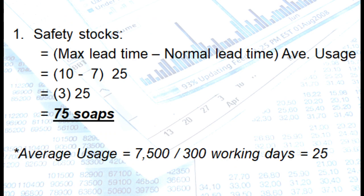So let us compute for the units that we need to maintain as safety stock. So we will use the formula maximum lead time minus normal lead time multiplied by average usage. In the problem, our maximum lead time is 10 while our average normal lead time is 7. Now we need to compute for the average usage. How are we going to get the average usage? That's 7,500 divided by 300 working days. So we will arrive at 25. So 10 minus 7 multiplied by 25. So we will get 75 soaps as your safety stocks.